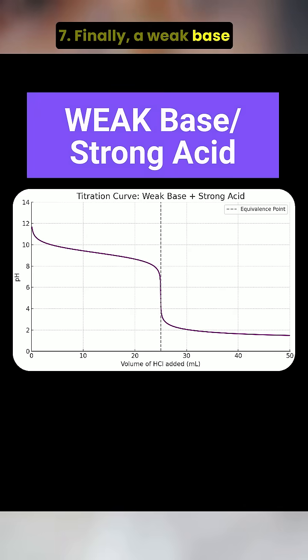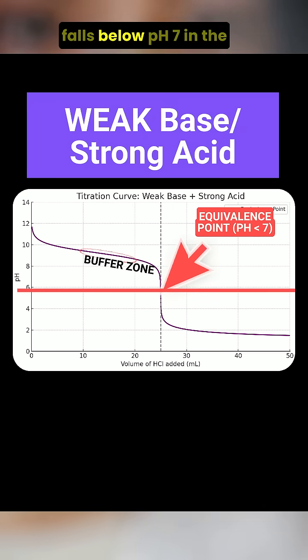Finally, a weak base with a strong acid, such as ammonia titrated with hydrochloric acid. This curve also shows a buffer region, followed by a shallow drop near the equivalence point, which falls below pH 7 in the acidic range.